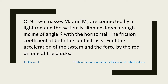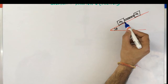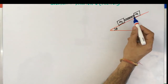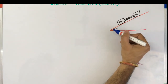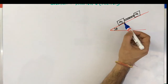The problem statement says: two masses M1 and M2 are connected by a light rod and the system is slipping down a rough incline of angle theta with the horizontal. The friction coefficient at both contacts is mu. We have to find the acceleration of the system and the force by the rod on one of the blocks, which means finding the acceleration and the tension in the rod.